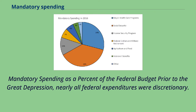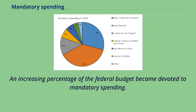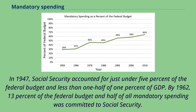Prior to the Great Depression, nearly all federal expenditures were discretionary. Mandatory spending grew following the passage of the Social Security Act in 1935, and an increasing percentage of the federal budget became devoted to mandatory spending. In 1947, Social Security accounted for just under 5% of the federal budget and less than one-half of 1% of GDP.